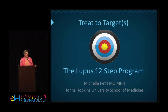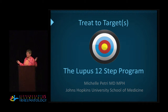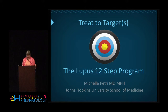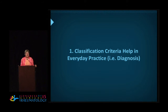Now, you know in RA we're used to treat to target. Well, I'm sorry — don't blame the messenger — but I decided there had to be at least 12 targets in lupus. So let's start with our first one.